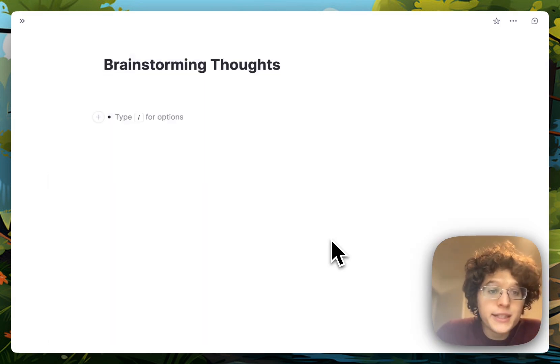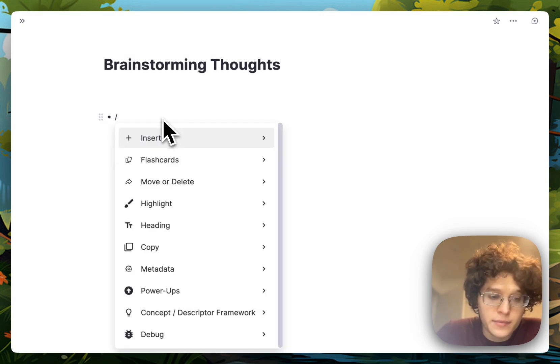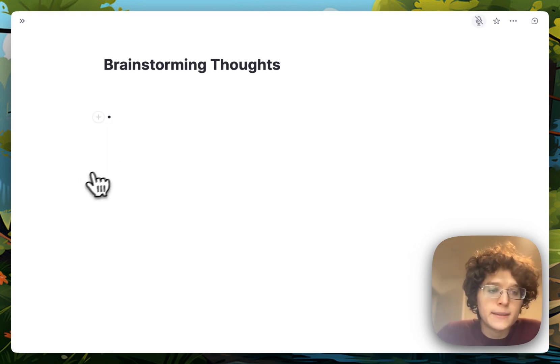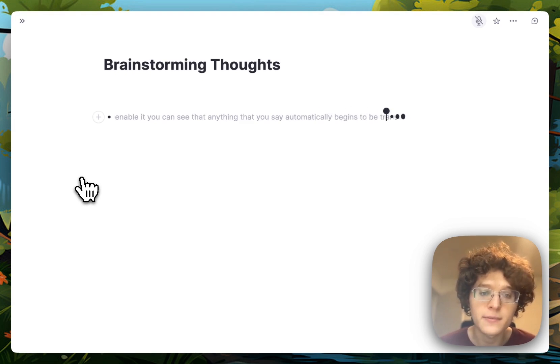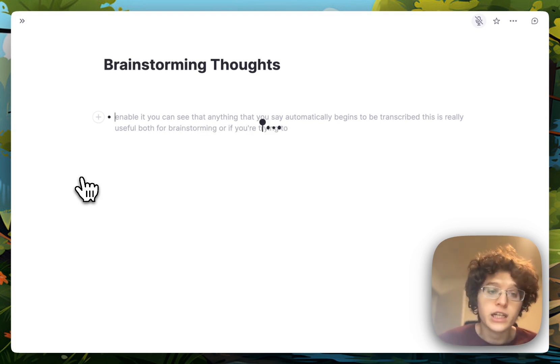We've also added voice typing directly in the editor. In the editor, just use the slash key to open up the command bar here, and then type in voice and enable it. You can see that anything that you say automatically begins to be transcribed. This is really useful both for brainstorming or if you're trying to transcribe some lecture or some other thoughts in class.